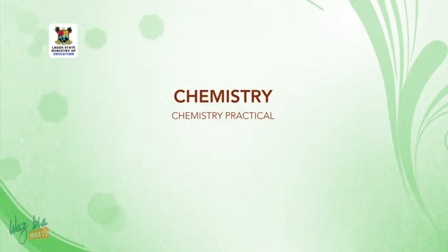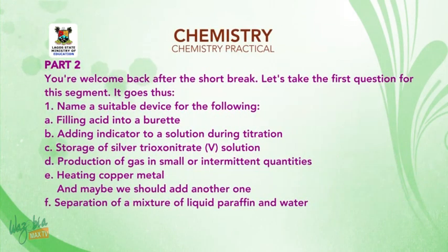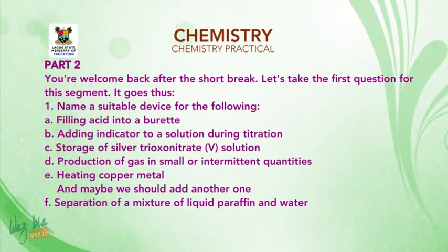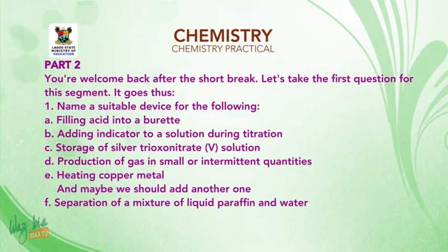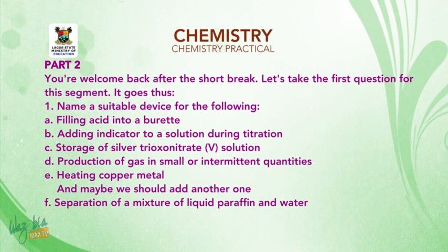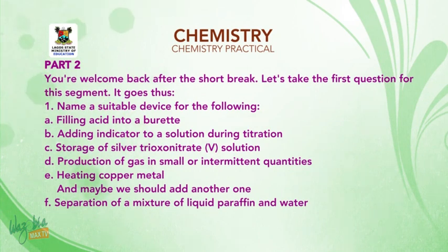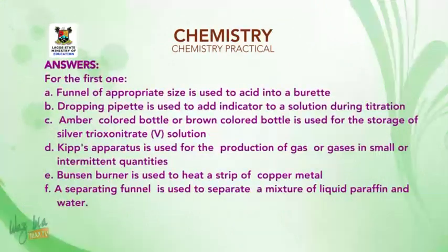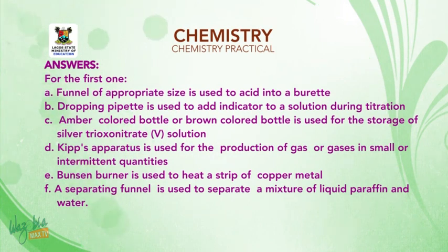Welcome back after the short break. Let's take the first question for this segment: name a suitable device for the following — A: filling acid into a burette, B: adding indicator to a solution during titration, C: storage of silver trioxonitrate(V) solution, D: production of gas in small or intermittent quantities, and E: heating copper metal. For A, a funnel of appropriate size is used to fill acid into a burette. For B, a dropping pipette is used to add indicator to a solution during titration.